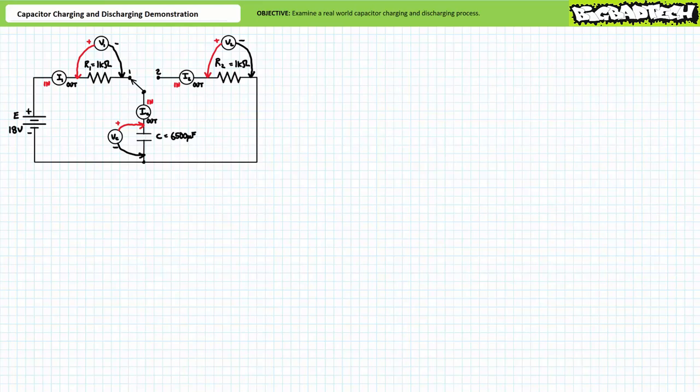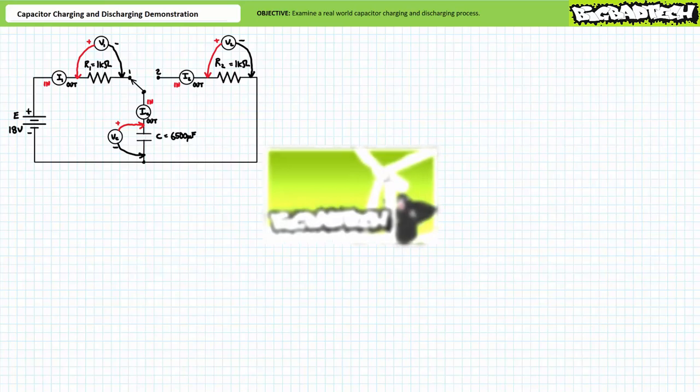Good day and welcome to Big Bad Tech. I'm your instructor Jim Pytel. Today we'll take a quick look at a real-world capacitor charge and discharge circuit and see if cold hard reality matches our theoretical expectations. This demonstration operates under the presumption the viewer is intimately familiar with both the capacitor charge and discharge process, and additionally has a degree of mathematical competency to determine electrical properties at specific times and solve for times that satisfy specific conditions.